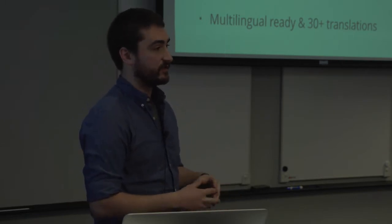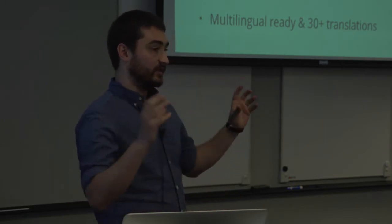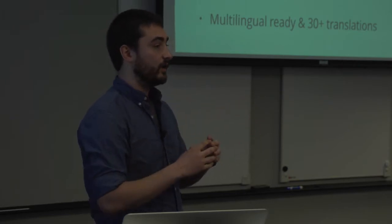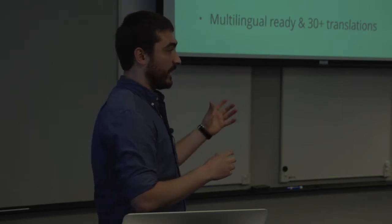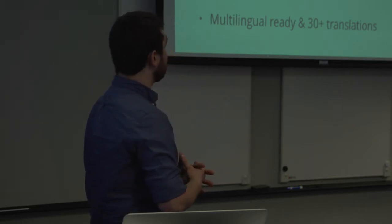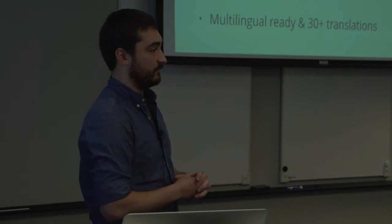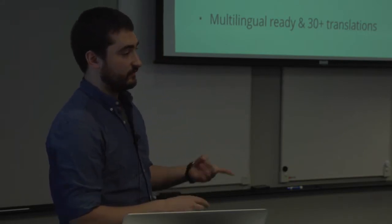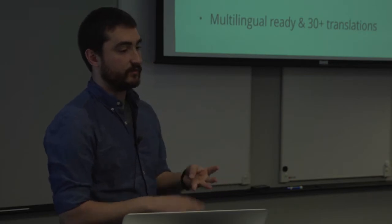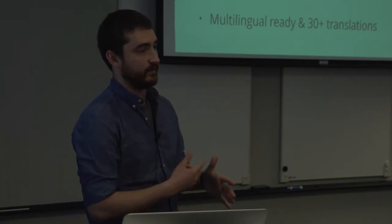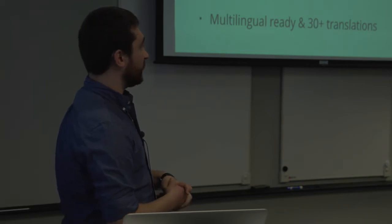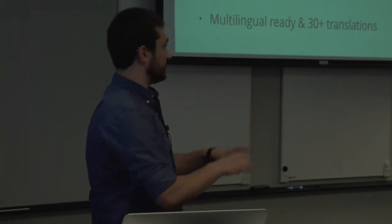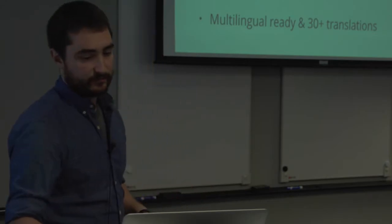We have over 30 community translations and it's really internationalization-friendly — a lot of people use this with WPML. Most of the strings that come with Roots, like prompts for a 404 page or a blog header, are translatable. We love pull requests from other languages — we have German, Japanese, two versions of Chinese, and a Hindi translation. That's now in a separate repository.